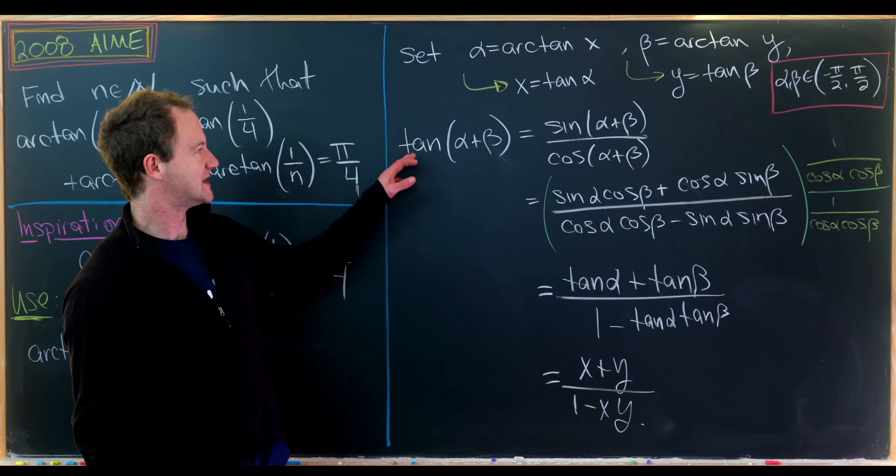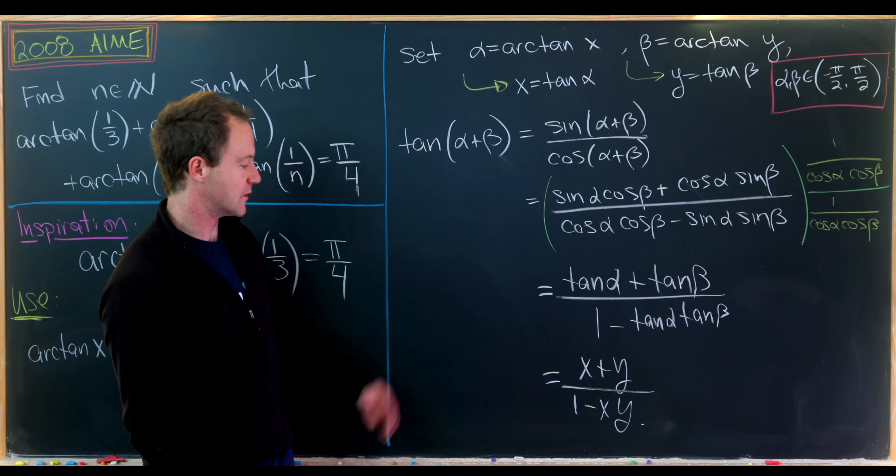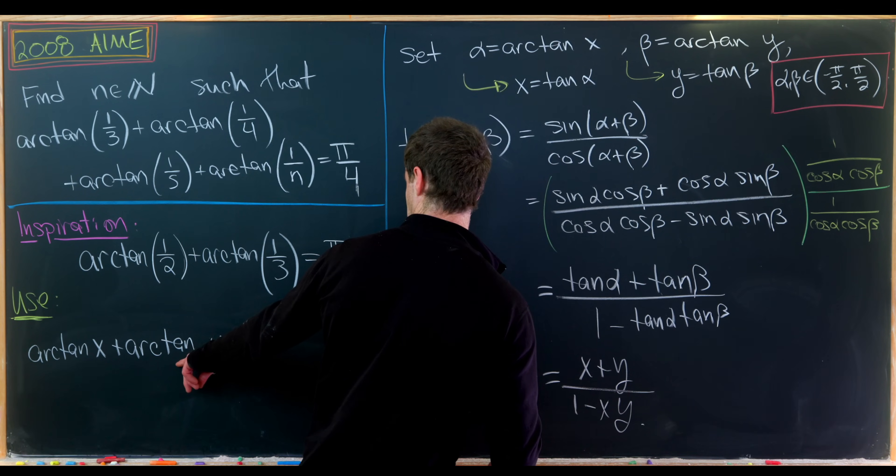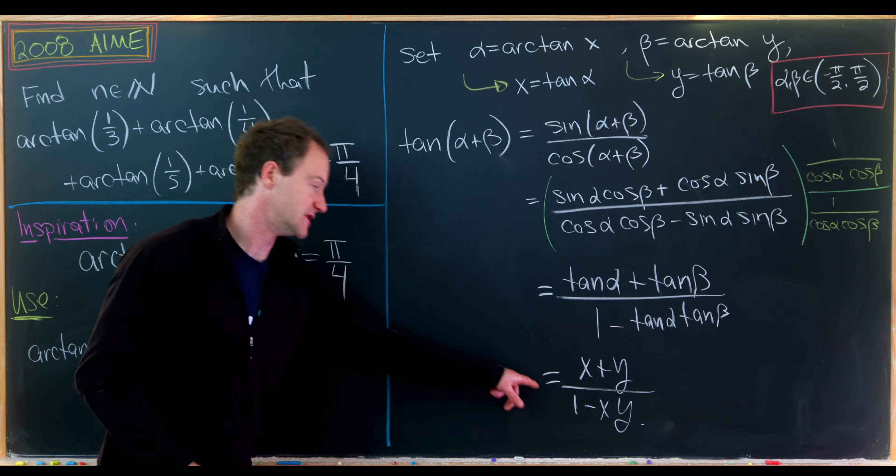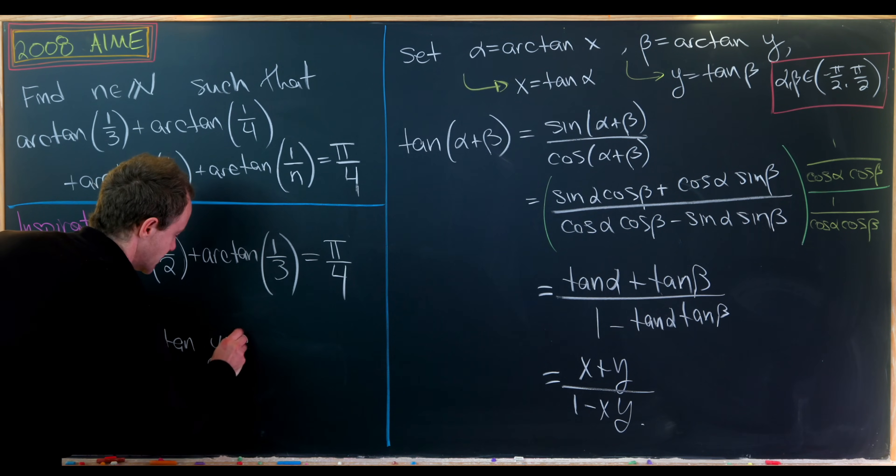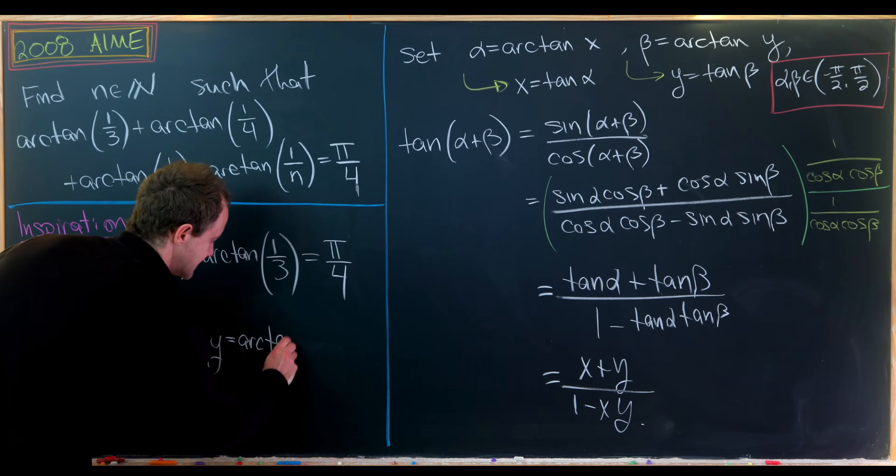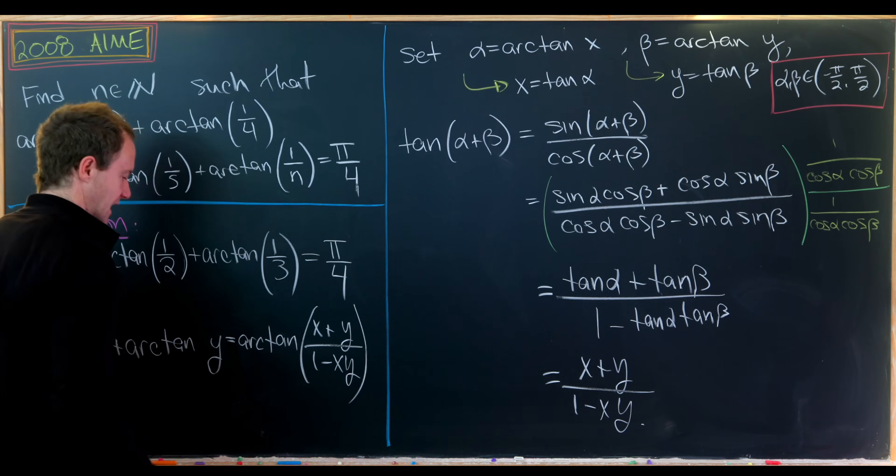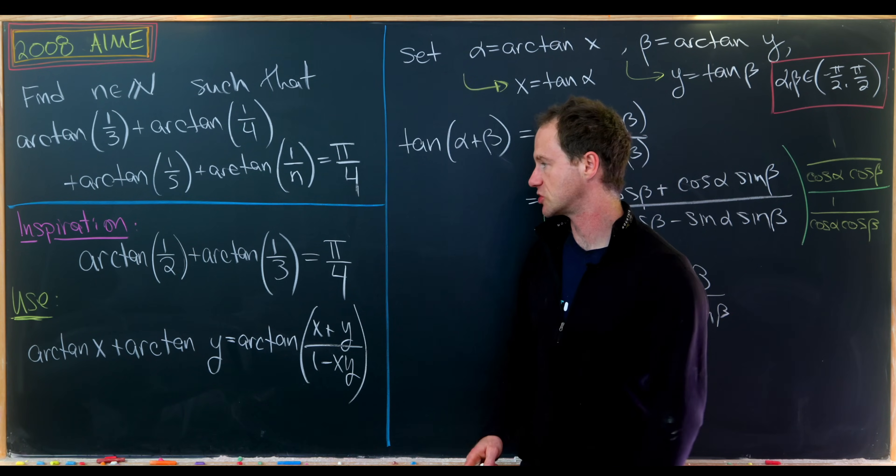Notice we can put this back in terms of x and y: this is (x + y)/(1 - xy). Taking the inverse tangent of both sides, α + β is equal to arctan((x + y)/(1 - xy)). That's our sum formula for the inverse tangent function.